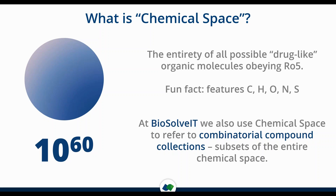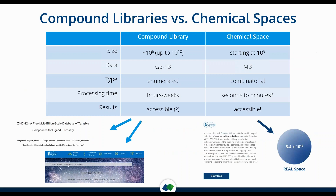We at the BioSolvIT team also use the term 'Chemical Space' — with capital letters — to refer to a combinatorial compound collection. It's only a subset of the entire chemical space. The difference between chemical spaces and compound libraries is in the numbers. A compound library can in theory have infinite size, but in practice this doesn't happen because it becomes too large to enumerate. A compound library normally features up to several million compounds.